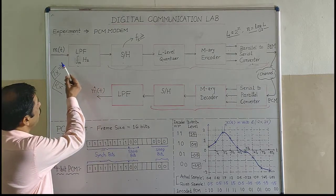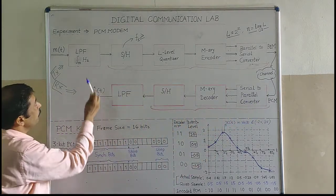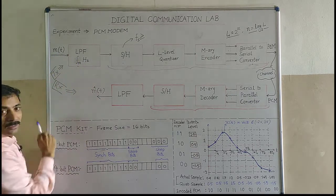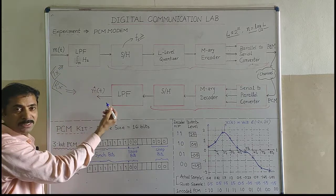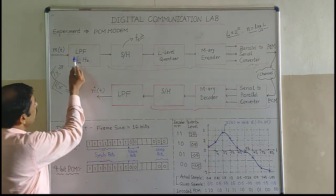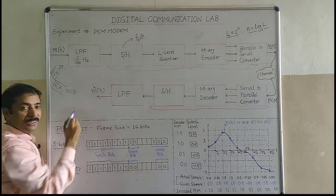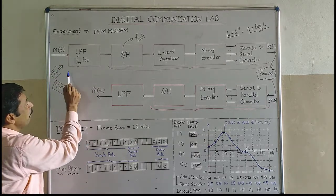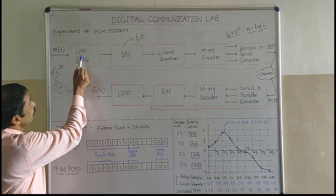On the board I have the Pulse Code Modulator and Pulse Code Demodulator. The first block of the Pulse Code Modulator is LPF. I am applying signal M(t), which can be a pure sine wave for demonstration purposes, or can be a music signal, speech signal, or voice signal. This signal is given to the low pass filter, which has a cutoff frequency of FM Hertz. We are using this low pass filter to make the signal band-limited, since no time-limited signal is band-limited. That is why we use a filter with a cutoff frequency of FM Hertz.